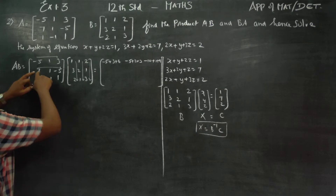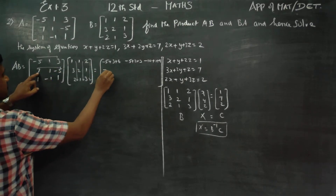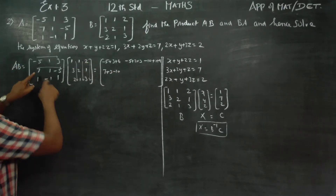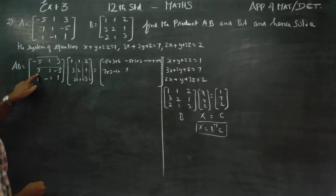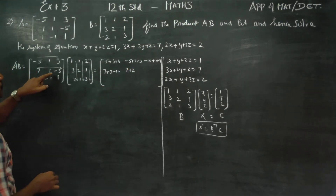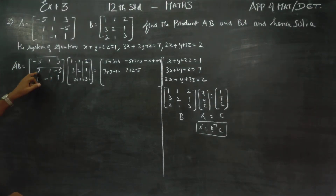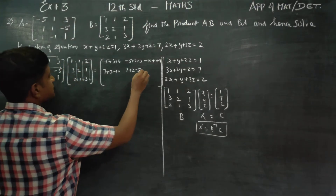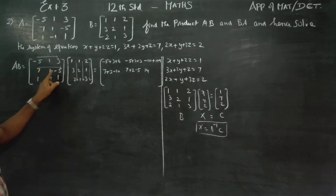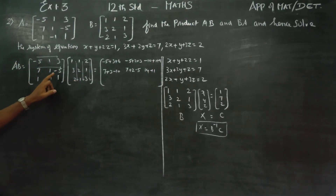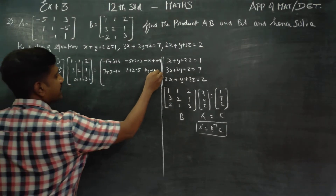Second row: 7 times 1 is 7, 1 times 3 is 3, minus 10. 7 times 1 is 7, 1 times 2 is 2, minus 5. 7 times 2 is 14, 1 times 1 is 1, and finally -5 into 3 is -15, minus 15.